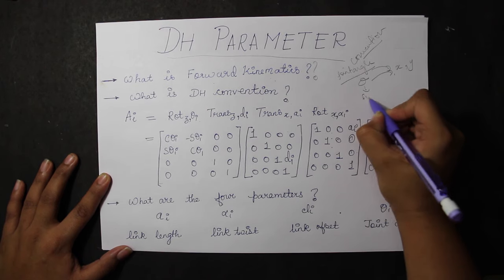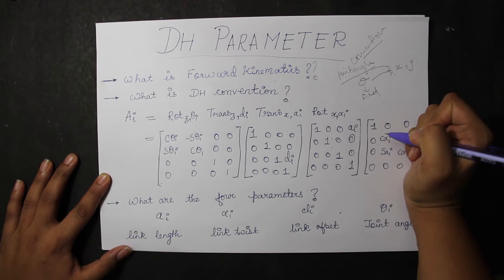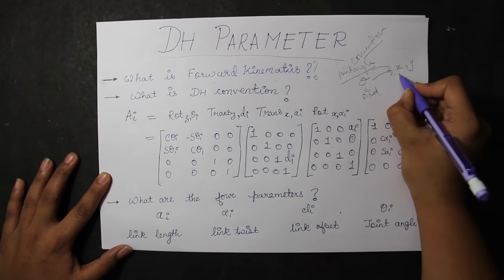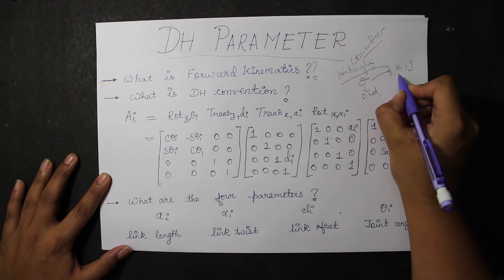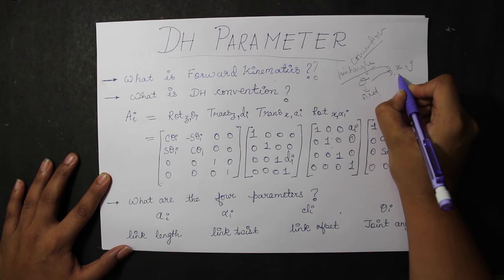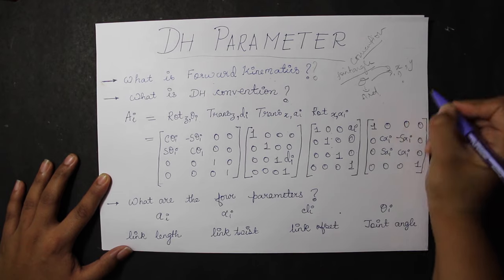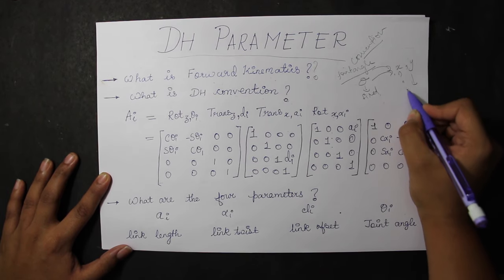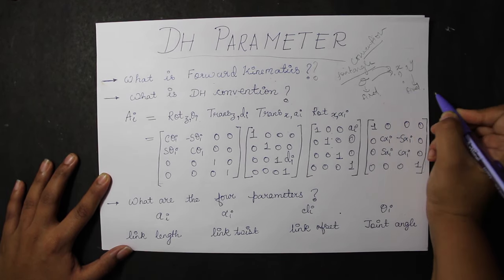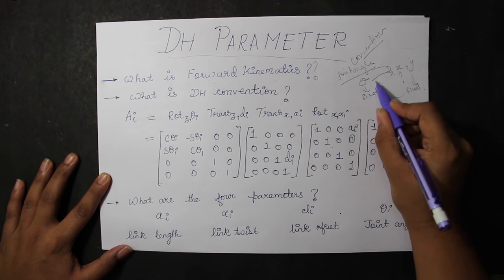In forward kinematics, we give out the theta values of the manipulator in order to reach the position. That is, the theta value is fixed and the position is what we are going to check. Whereas in inverse kinematics, we define the position where we want to reach and instead we calculate the theta values of the manipulator.